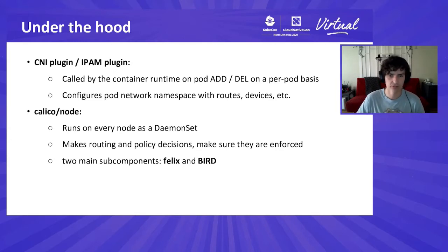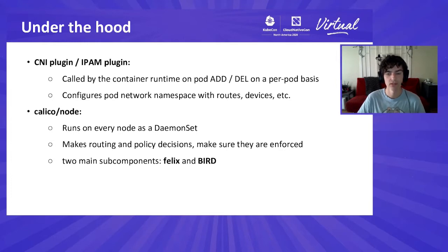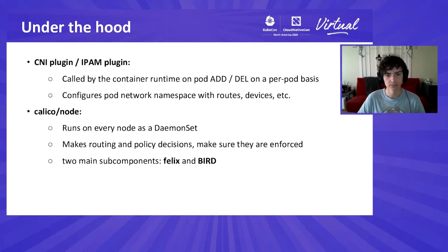Calico node is the second main component — a long-lived container that runs on every node, typically as a daemon set, and it makes routing and policy decisions. Within Calico node there are two main subcomponents: Felix, which the Calico team wrote, is responsible for maintaining network policy state; and Bird, an open source networking stack included in Calico, used when BGP is required to distribute routes through the network. Each of these components needs to be tightly coupled with the underlying networking technology because they're reading and writing state and interacting with that data plane.